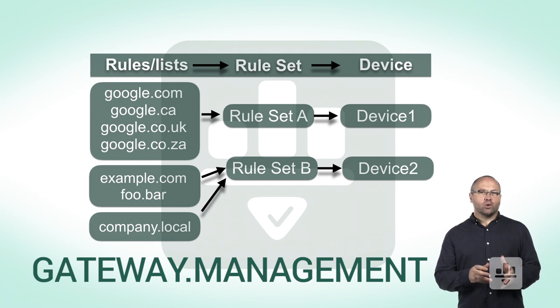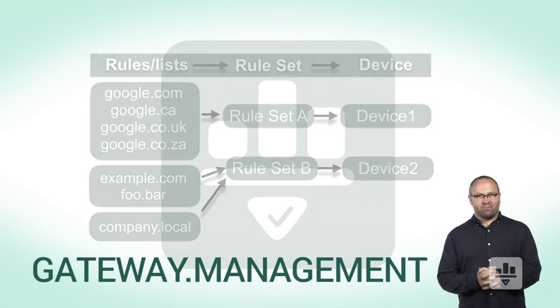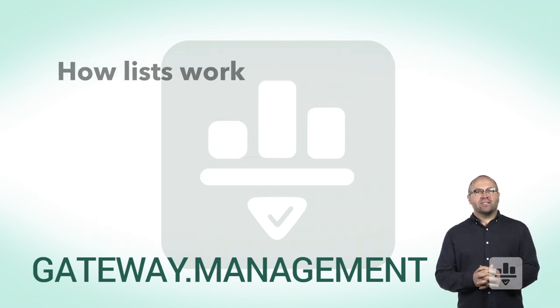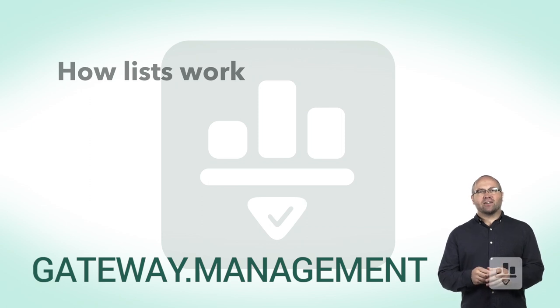And finally, a rule set is what you apply to a device at layer 2 or 3. Now, back to lists. Since they are the basic building block of this software stack, I would like to cover off how they work.